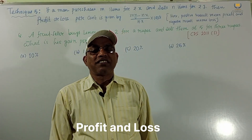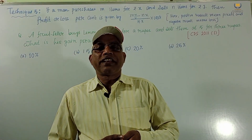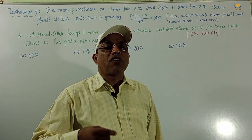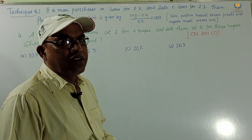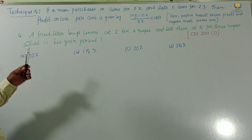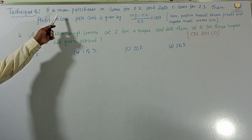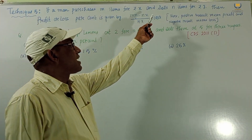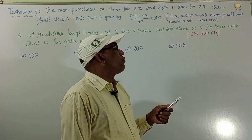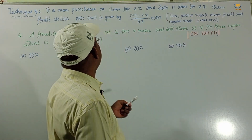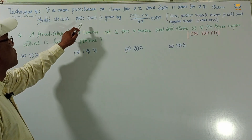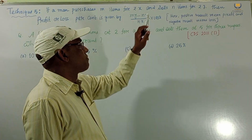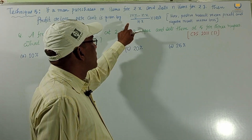Welcome to Shake Mathematics classes. Today we consider Technique 5: Profit and Loss. We can solve problems using a shortcut method. The technique states: if a person purchases m items for rupees x and sells n items for rupees y, then profit or loss percent is given by (my minus nx) by nx into 100 percent.